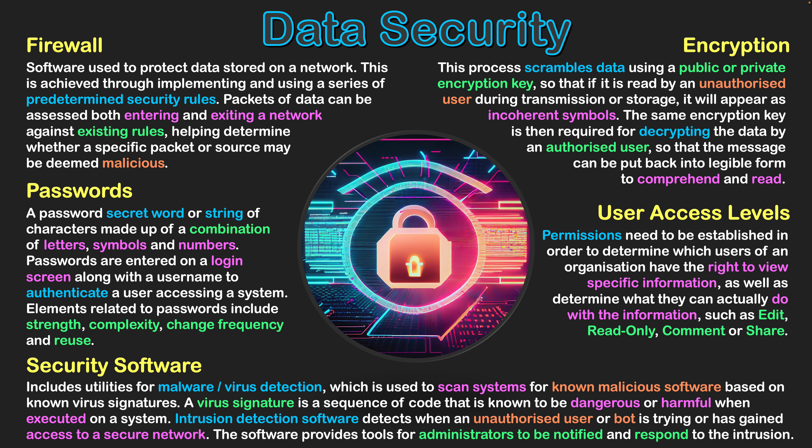The final software type is intrusion detection software, which detects when an unauthorized user or bot is trying to gain access into a network, or has already done so. Administrators are notified and can see the IP address attempting to access the network. They can then decide on a response — such as blocking that address, tracing where it's coming from, or gathering further information to guide their decision about how to handle the intrusion attempt.